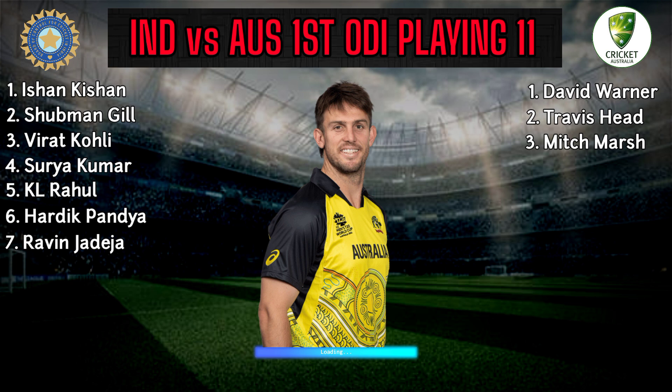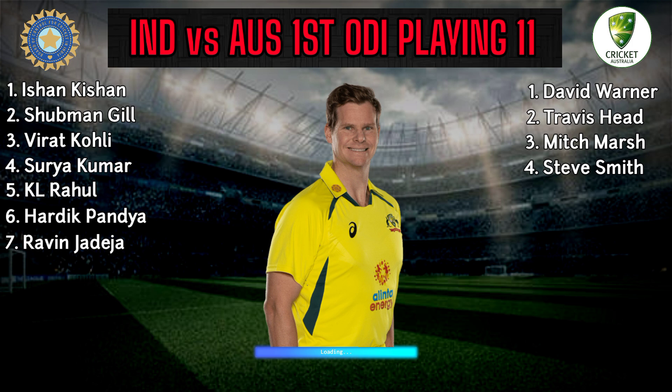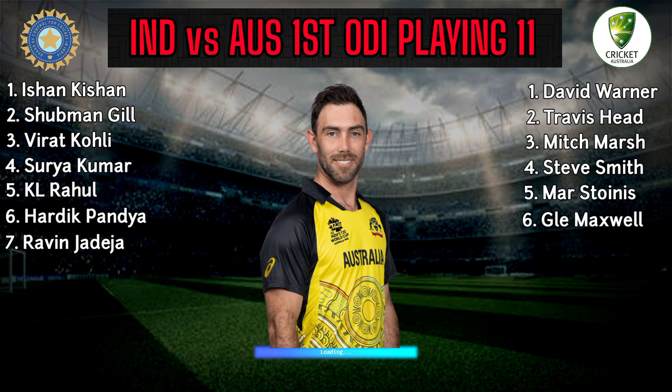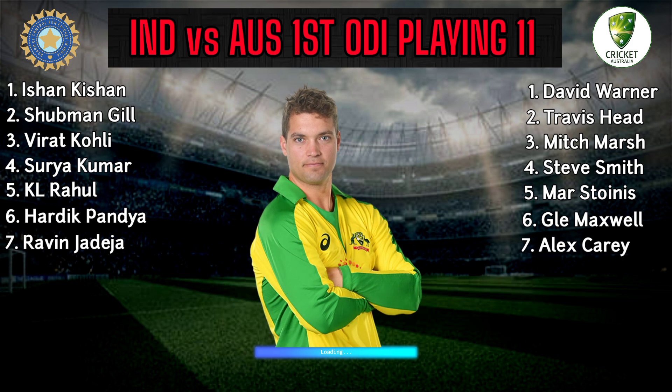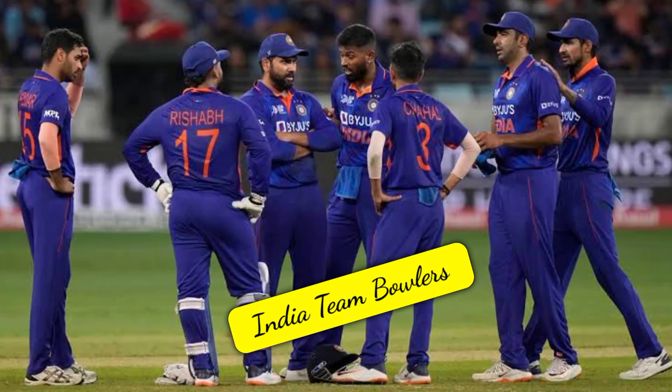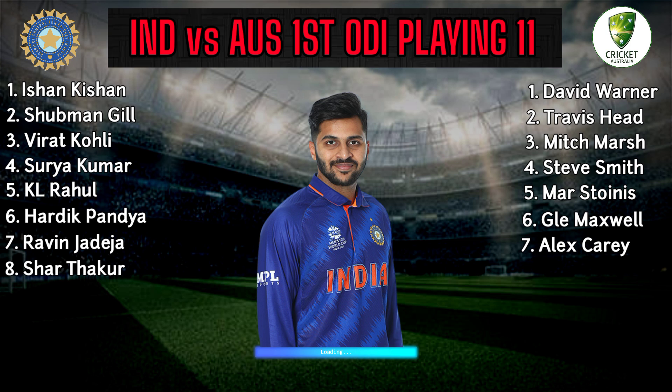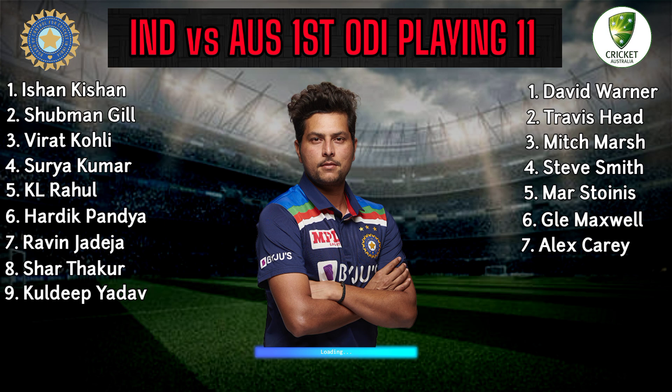Australia Team Middle Order. Number 3: Mitchell Marsh, All-Rounder. Number 4: Steve Smith, Right-Hand Batsman. Number 5: Marcus Stoinis, All-Rounder. Number 6: Glenn Maxwell, All-Rounder. Number 7: Alex Carey, Wicket Keeper Batsman.